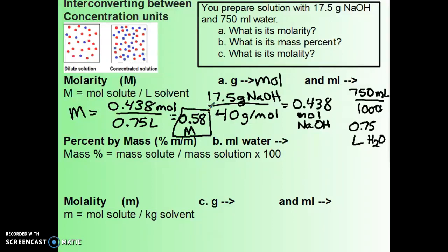Next we get to percent by mass. Since our solute is given to us in grams, we don't need to worry about converting it because that's what we need. What we will need is the mass of our solvent so we can find the mass of our solution. If we have 750 milliliters of water, that can be converted into grams just by remembering that the density of water is 1, so 750 milliliters H2O is 750 grams of H2O.